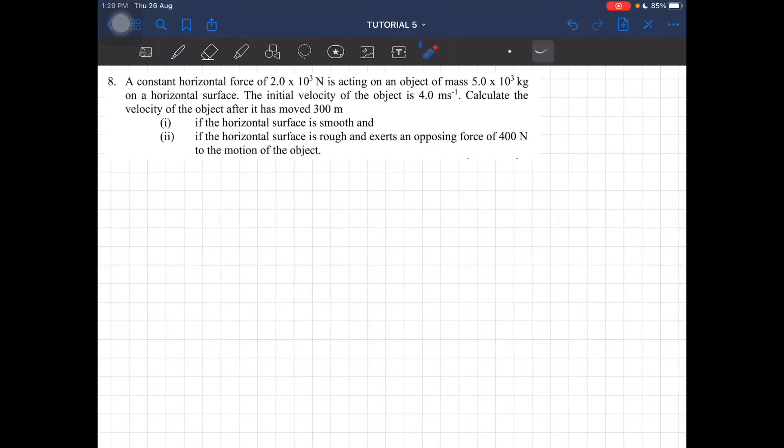Let's look at question 8. A constant horizontal force of 2×10³ newtons is acting on an object of mass 5×10³ kilograms on a horizontal surface. The initial velocity is 4 meters per second. Calculate the velocity after it has moved 300 meters.